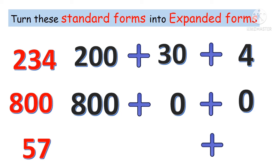What about 57? The number at the right is at the 1's place. 7 is at the 1's and 5 at the 10's. 10 times 5 is 50. Well done.